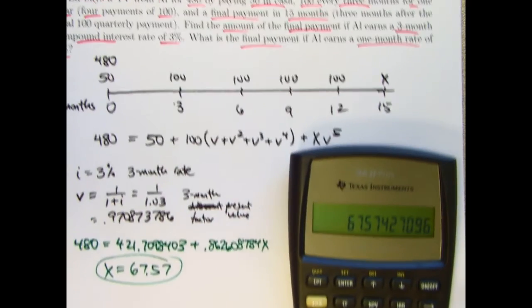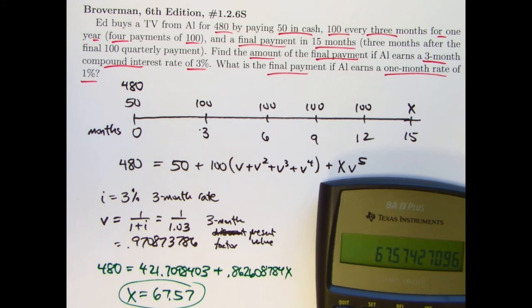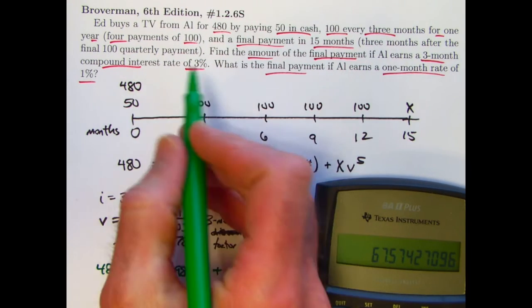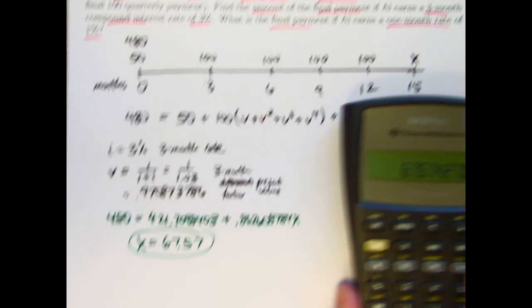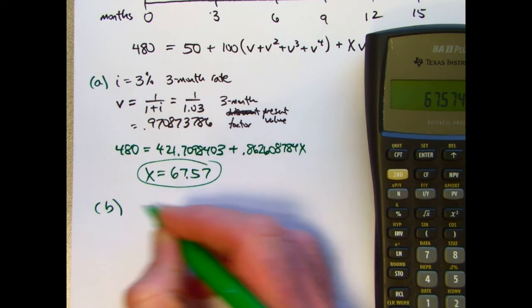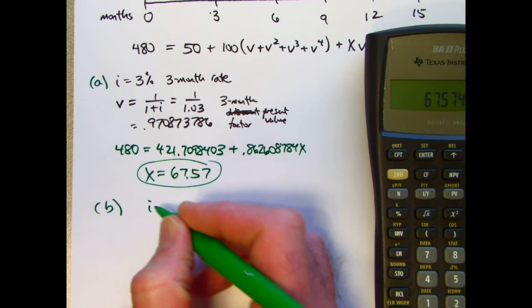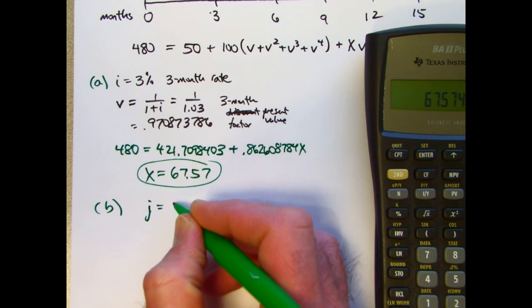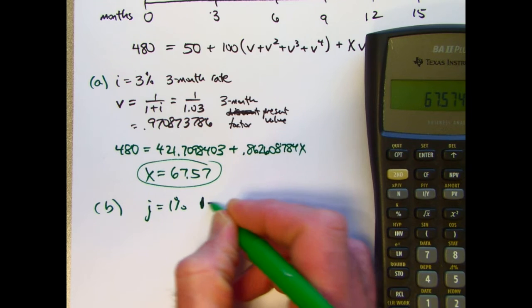The method for the second question is pretty much the same, except V is going to be different. The one-month interest rate is 1%. So this is part A here. Let's call it j instead of i. This is 1% one-month rate.